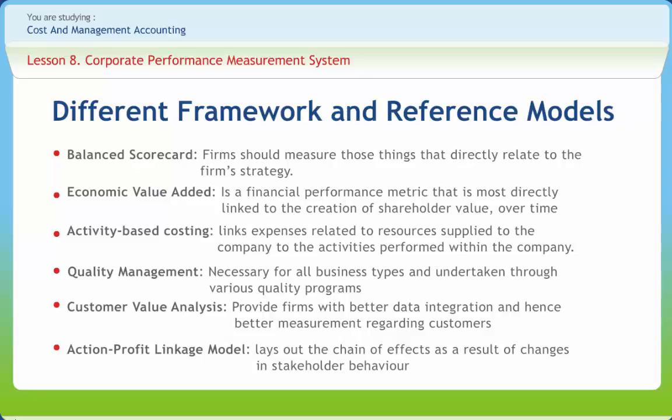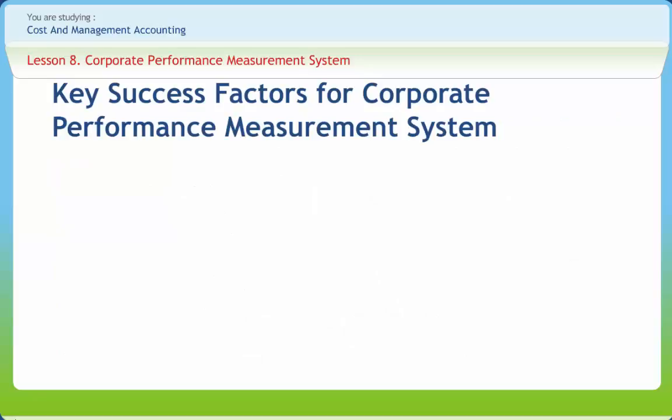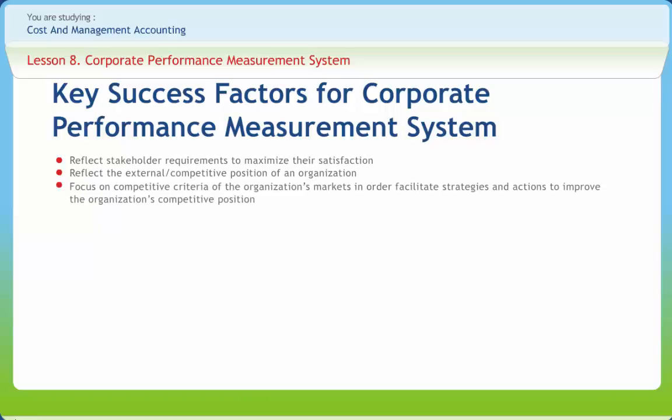While many practitioners may desire reference models to ease the initial design and implementation of a BPM, they do not address how to construct a BPM system that is tightly integrated with a differentiated structure. Corporate Performance Measurement Systems should reflect stakeholder requirements to maximize their satisfaction, reflect the external or competitive position of an organization, focus on competitive criteria of the organization's market in order to facilitate strategies and actions to improve the organization's competitive position, provide an input into strategy development to help ensure alignment of strategy, actions, and measures.